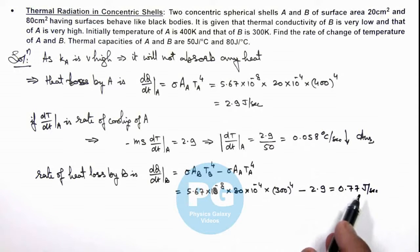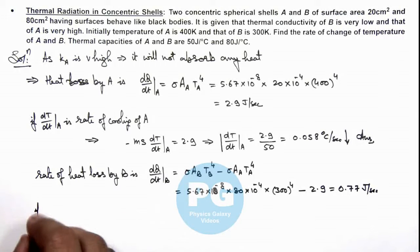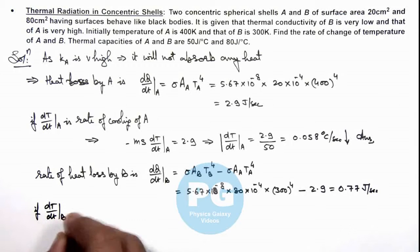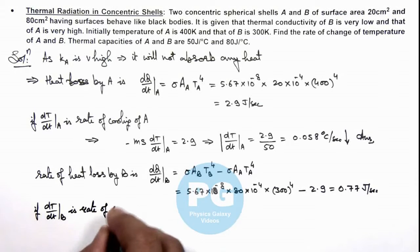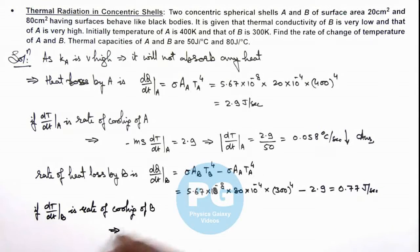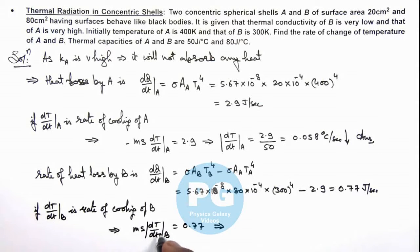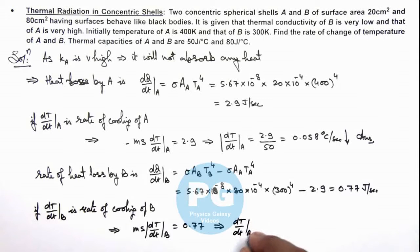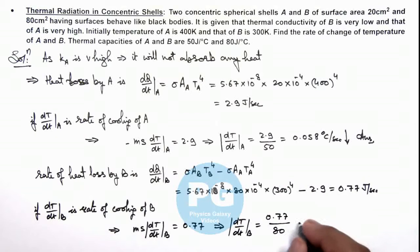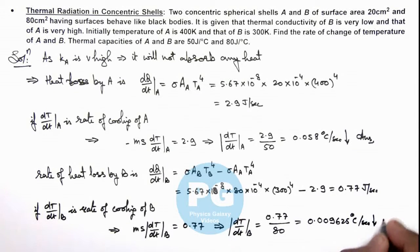For the rate of temperature change of B, dQ/dt of B equals m·s·(dT/dt of B) = 0.77. Taking the magnitude, since temperature is falling, dT/dt of B equals 0.77 divided by the heat capacity of B, which is given. Numerically, this gives 0.009625 degrees centigrade per second, which is also falling down. That is the result of this problem for B.